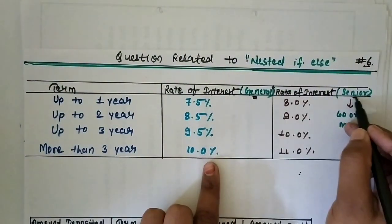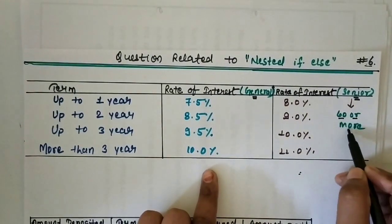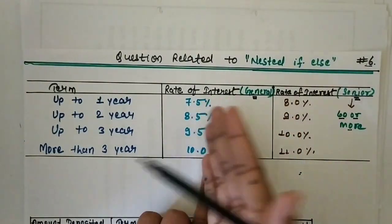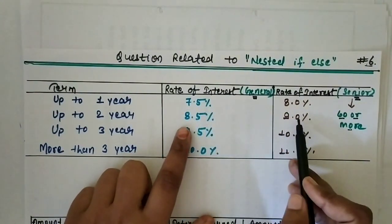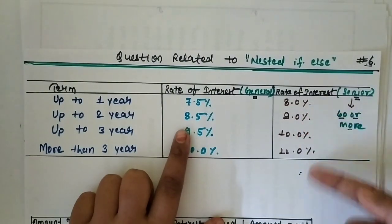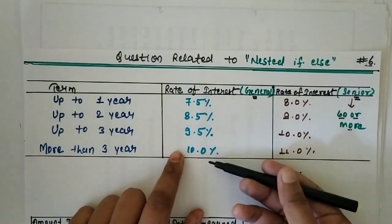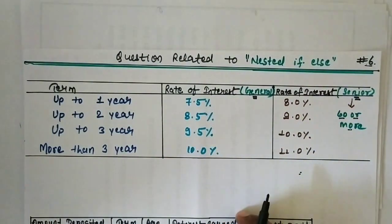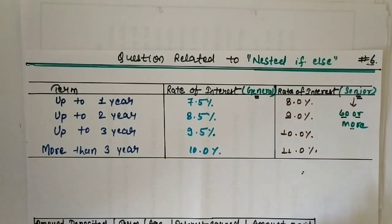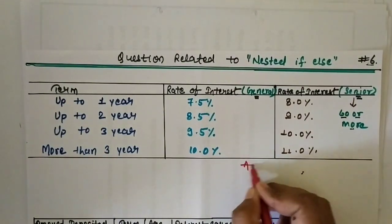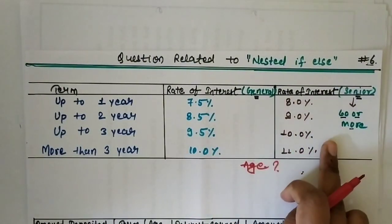One part is for junior and one is for senior. Junior means whose age is less than 60, and senior means whose age is 60 or above. For age less than 60, the rates you will see are 7.5, 8.5, and 9. For a senior citizen, the rate of interest is higher. So first of all, when you go to the bank, what should you check first? Age.